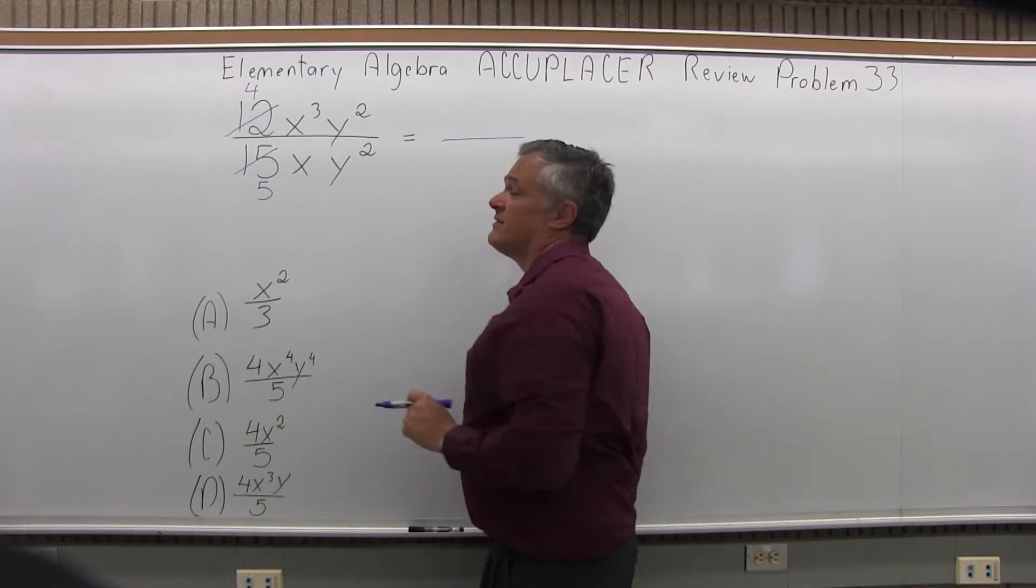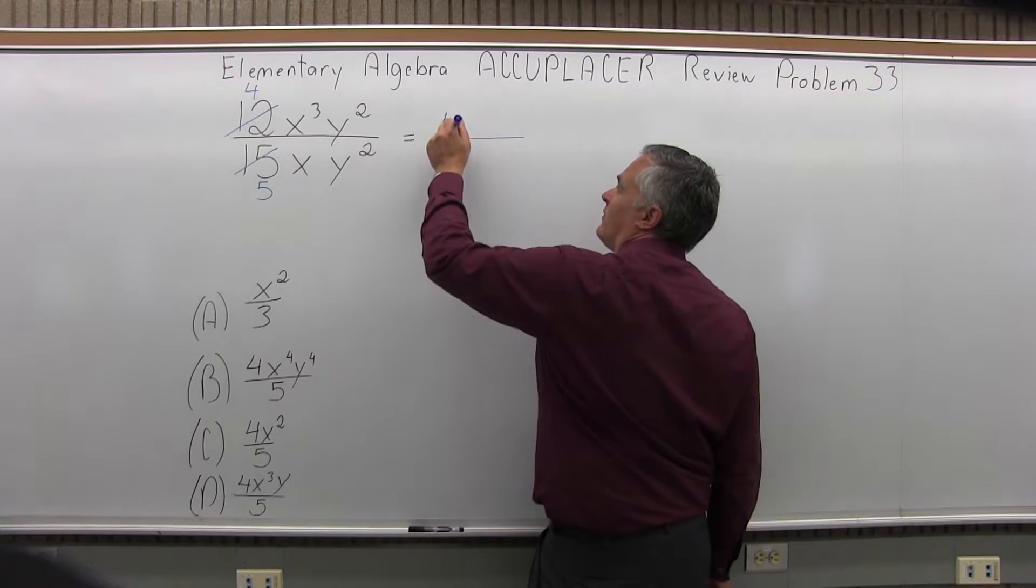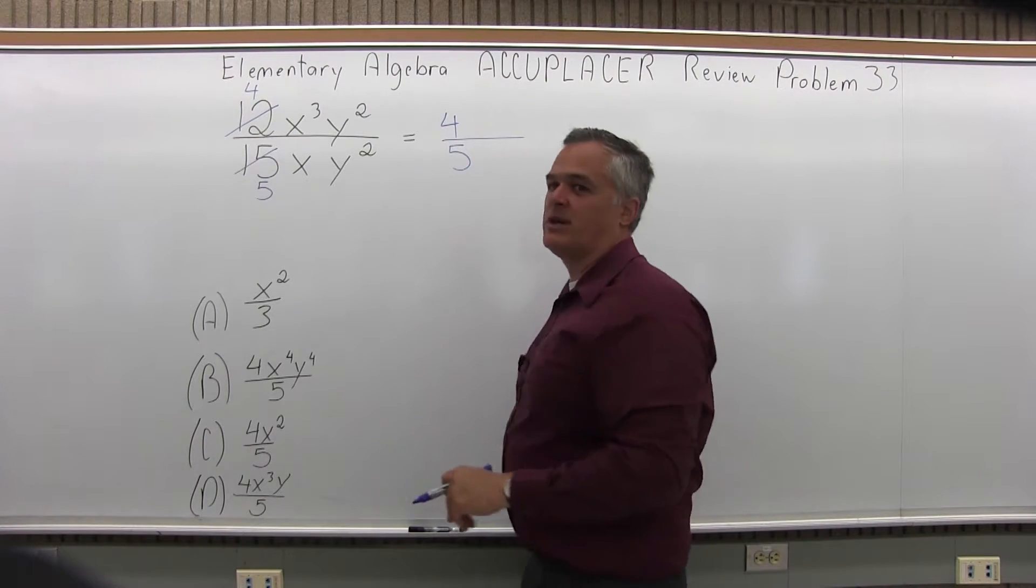Now the 4 and the 5, check to see if it will reduce again, it won't. So that's as far as it goes. On the top I have a 4 and in the denominator a 5. So now I'm done with the numbers.